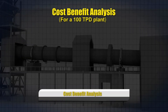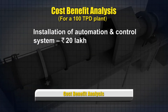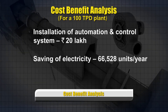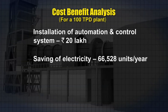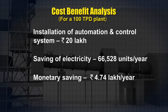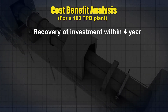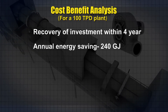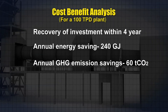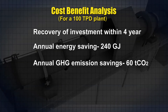For a 100 TPD DRI plant, installation of the automation and control system will incur a cost of approximately 20 lakh rupees. This installation can lead to a saving of 66,528 units of electricity annually, meaning a monetary saving of 4.74 lakh rupees per year. Thus, the investment can be recouped within a period of four years. The installation can save 240 gigajoules of energy annually, leading to a GHG emission saving of 60 tons of carbon dioxide per year.